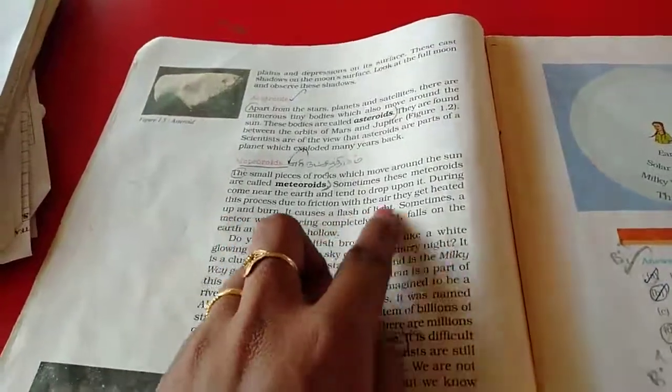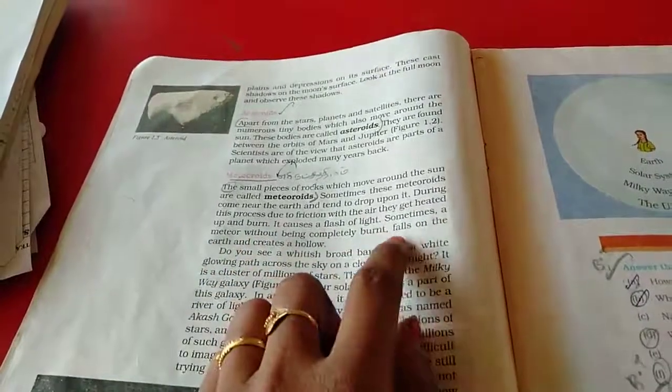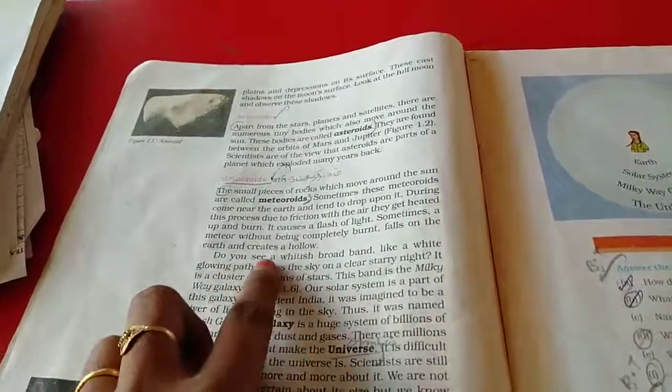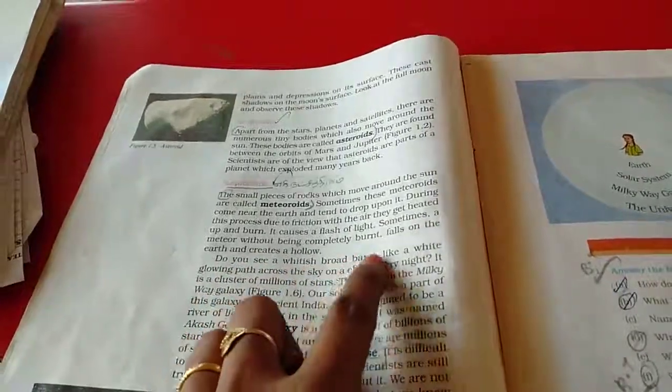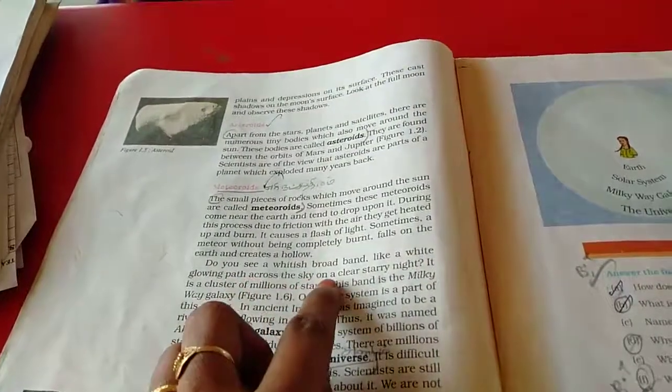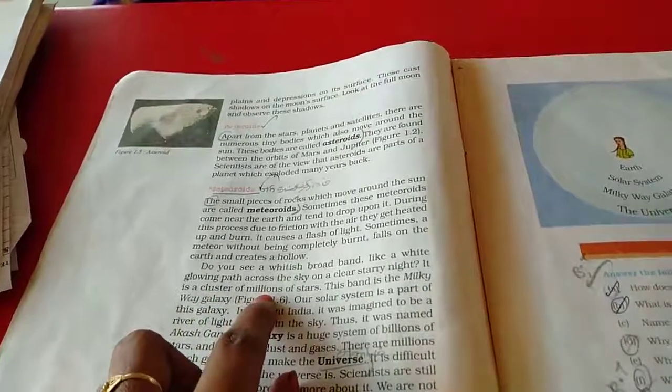It causes a flash of light. Sometimes, a meteor, without being completely burnt, falls on the earth and creates a hollow. Do you see a whitish broad band? Like a white glowing path across the sky on a clear, starry night. It is a cluster of million of stars.